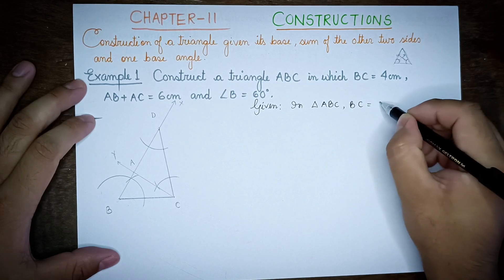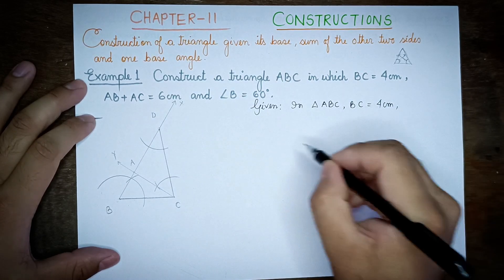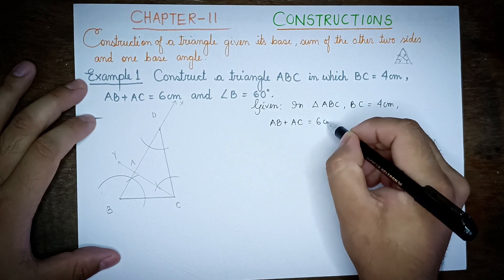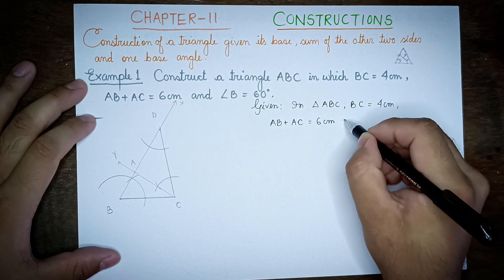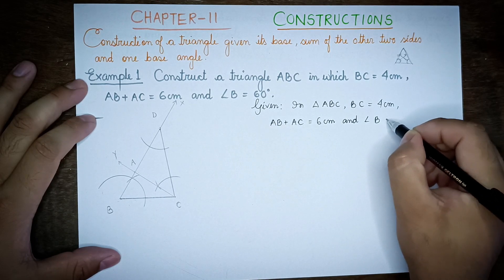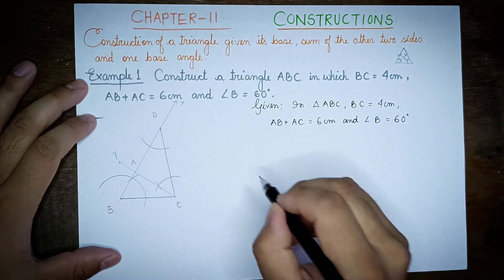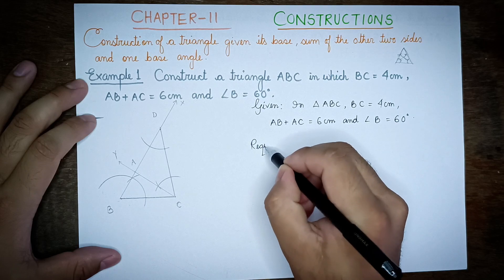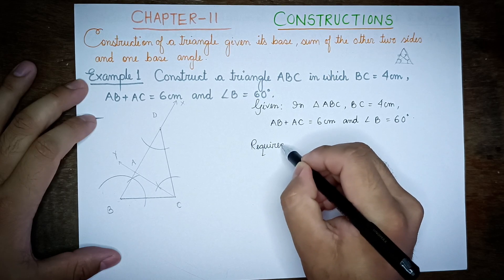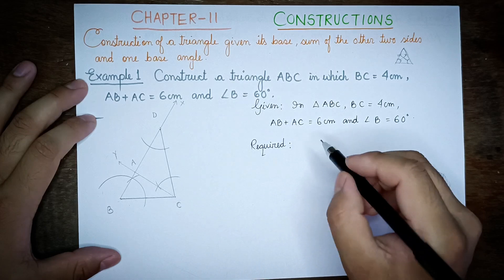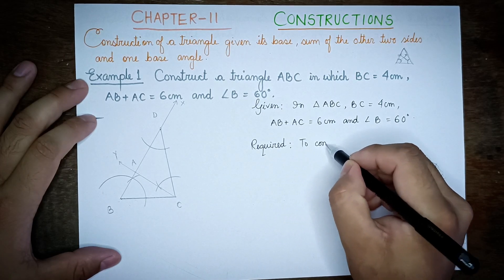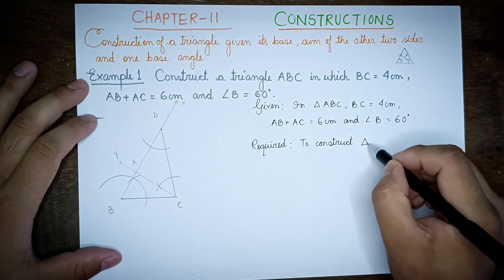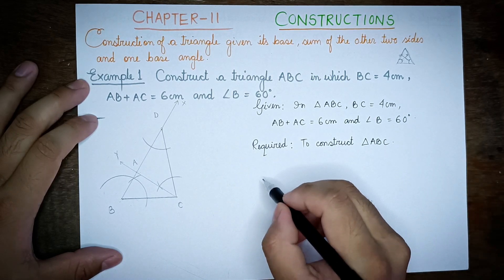BC value is 4 cm, and AB plus AC value is 6 cm, and angle B is 60 degrees. Required to construct triangle ABC. Steps of construction.